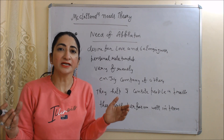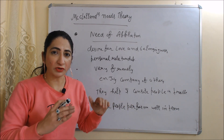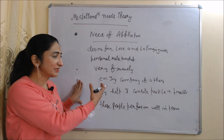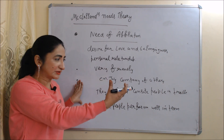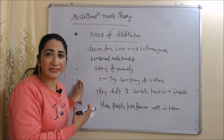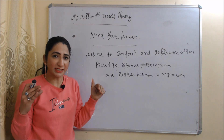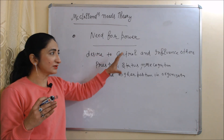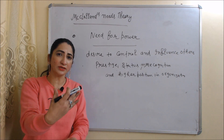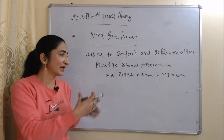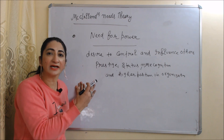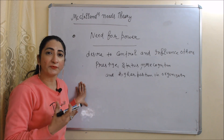Need for affiliation means a need for love, belongingness, and personal relationships. People with a high need for affiliation are very friendly, enjoy the company of others, help and console others in trouble, and perform well in teams. Need for power means a desire to control and influence others. People with this need want prestige, status, recognition, and higher positions in an organization to influence and control others.